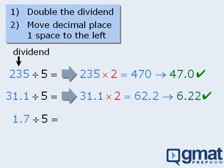Here's one more. To divide 1.7 by 5, we'll take 1.7 and double it to get 3.4. And then we'll move the decimal place one space to the left to get 0.34.